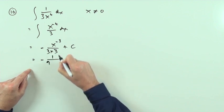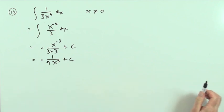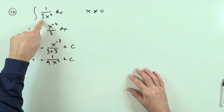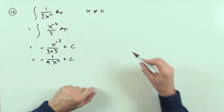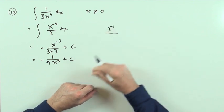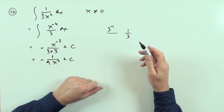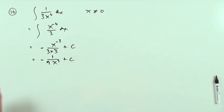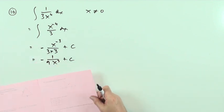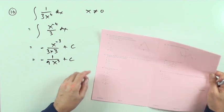That negative 3 power means x goes back underneath, so you've got negative 1 over 9x cubed. The important point: don't take the 3 up with the x — if you moved the 3 on top it would appear as 3 to the negative 1, which just means the 3 is underneath again, so there's no point doing that. The answer for number 16 is negative 1 over 9x cubed, which is A.